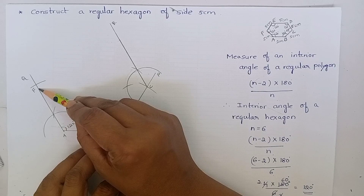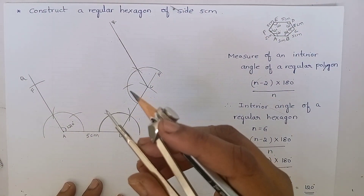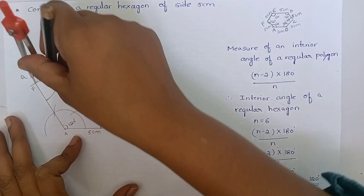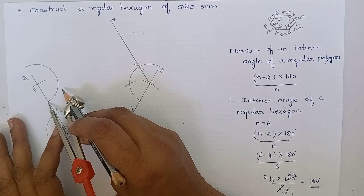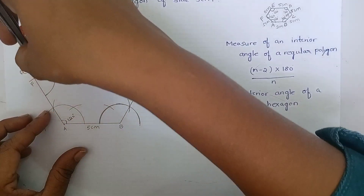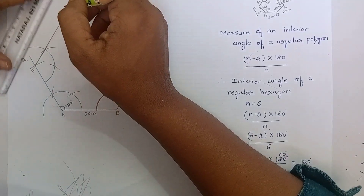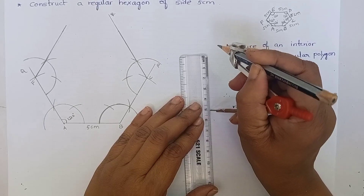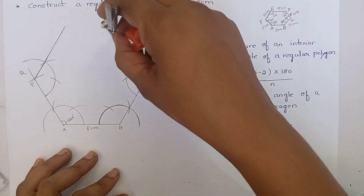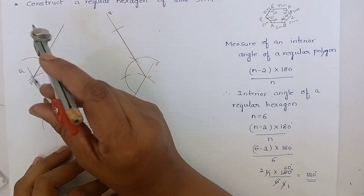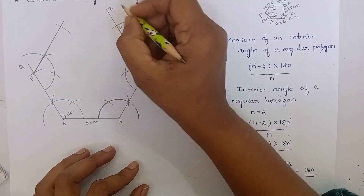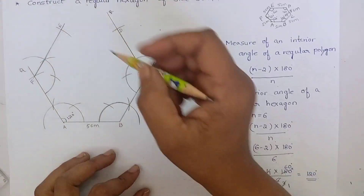Now we have to construct 120 degrees at point F. Adjust your compass to any measurement of your choice. Keep the compass at point F and draw an arc. Without changing the measurement of the compass, keep the compass at this point and cut an arc. Join this and produce a line. Measure 5 cm. Keep the compass at point C and cut an arc, then keep the compass at point F and cut an arc. Name this point as D and name this point as E. Join DE.